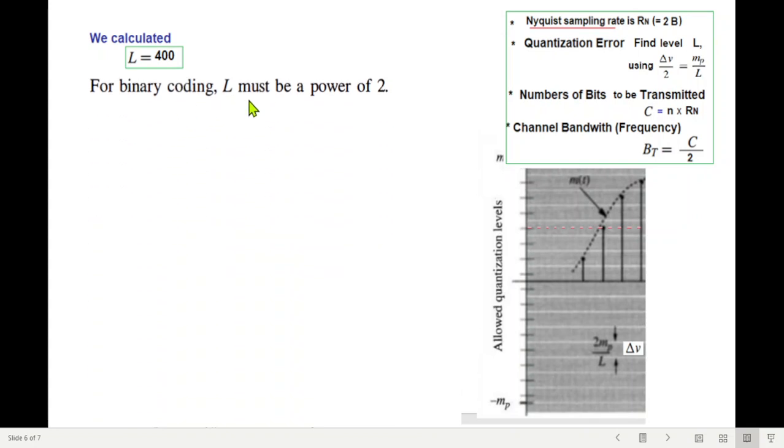We calculated L is 400, but we know that L must be a power of 2. So if we take power of 2 to make this L 400, we can either use 2 raise to the power 8 which is 256, or 2 raise to the power 9 which is 512. We should not take the lower value because it will introduce more error, so we will go for the higher value which will reduce the error further. So now the bits or binary digits we need is 9, to get this level of 512. N is log 2 of 512, which is 9 bits per sample.